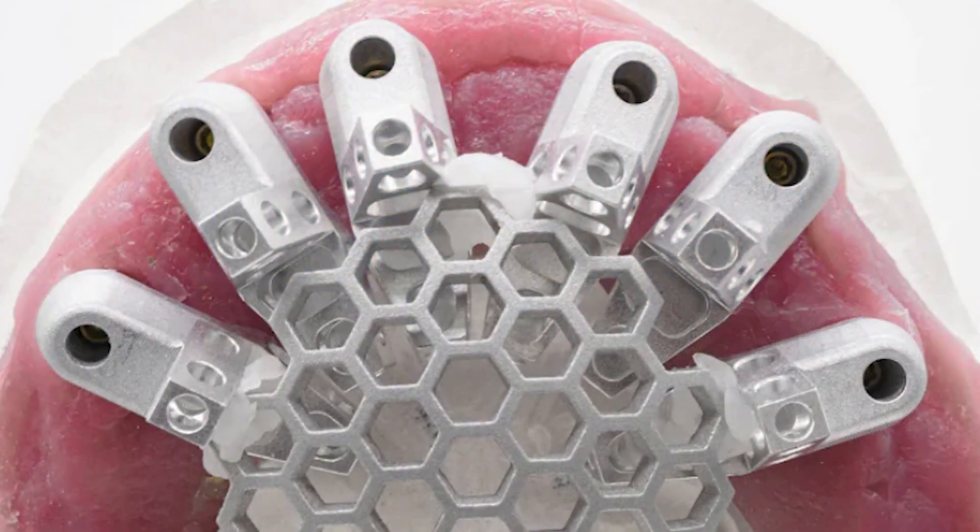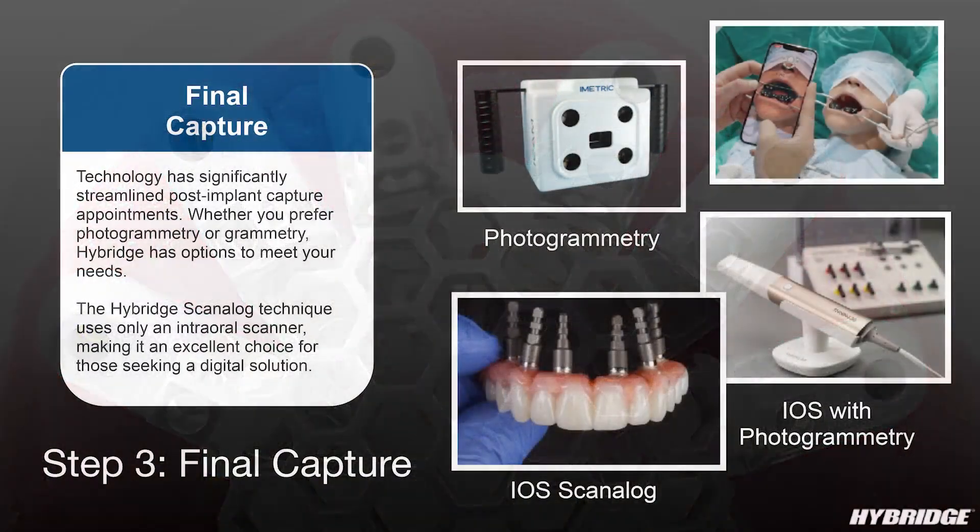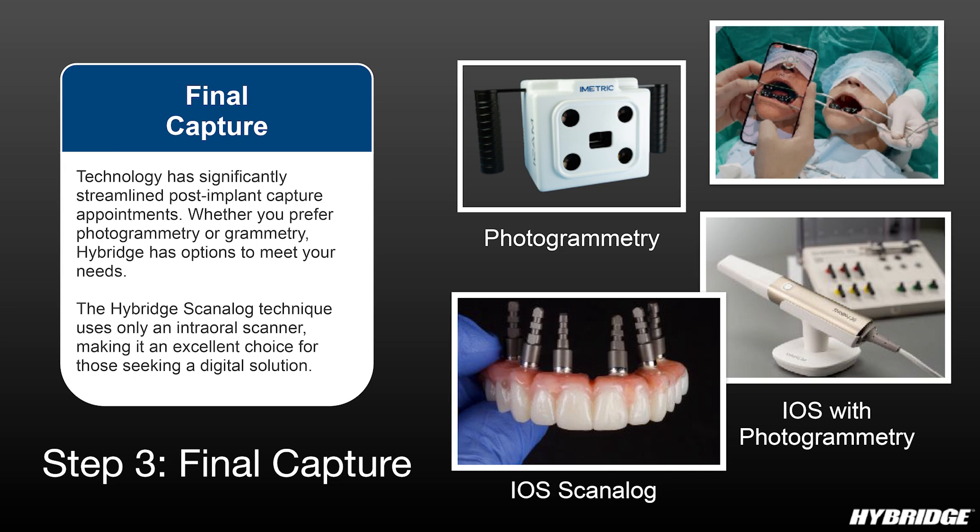That's where the fourth alternative came up: grammetry, which is a combination of using your intraoral scanner with the old-school concept of splinting. You place scan posts in the mouth, splint them, then remove them as one unit outside the patient's mouth where you work in a drier, more controlled environment and scan extraorally with your IOS. That's grammetry, and it helps your traditional scanner. But without a doubt, photogrammetry is now the gold standard among these newer digital technologies for full arch impressions.